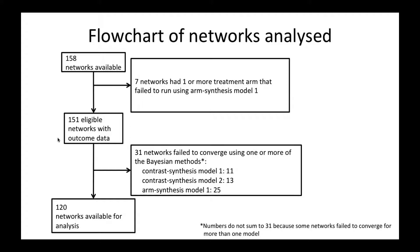Another 31 networks failed to converge. We looked at convergence diagnostics for the Bayesian methods, which included assessment of the trace plots, the posterior kernel density plots, the Brooks-Gelman diagnostic plot, and the shrink factors. If two of those diagnostics appeared to show lack of convergence, we assumed that the network didn't converge. We were left with 120 networks that we could look at.